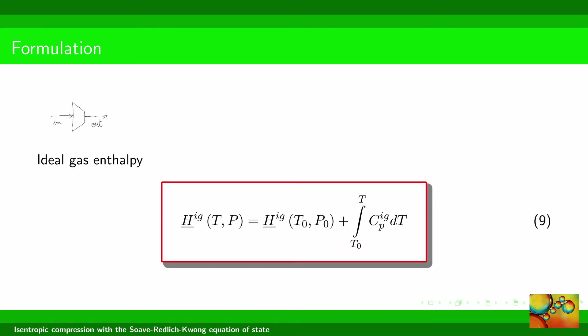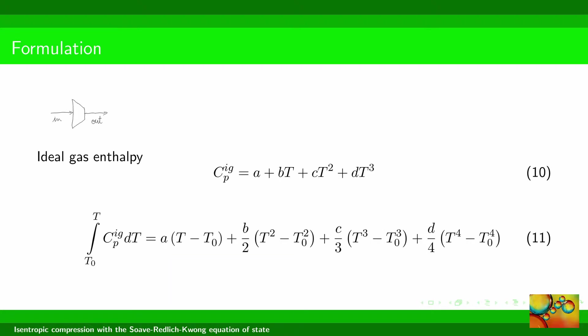The ideal gas contribution depends on the integral of Cp dT. Using a third-degree polynomial, we integrate and obtain equation 11.